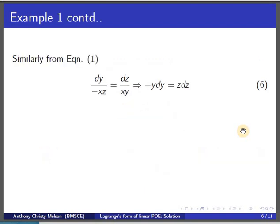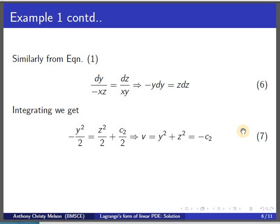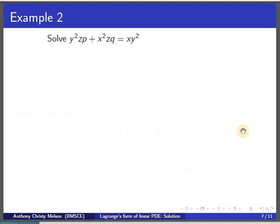Similarly, we choose another pair such that the third variable can be eliminated. Choosing the pair with dy and dz, we can eliminate x, separate the variables, and integrating we get v equal to y² + z². The solution of Lagrange's form of linear PDE is in the form f(u, v) equal to zero, therefore f(x² + y², y² + z²) equal to zero is the solution of the given problem.